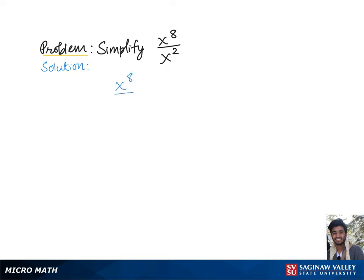To simplify x to the 8th over x squared, let's go over the rule which says to divide two exponents with a common base, we need to keep the base and subtract the exponent in the denominator from the exponent in the numerator.